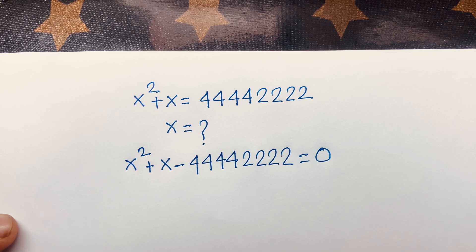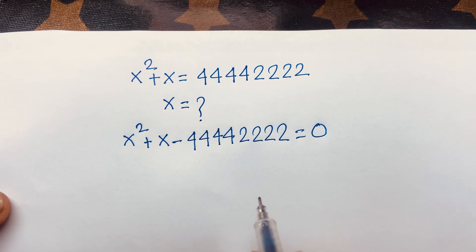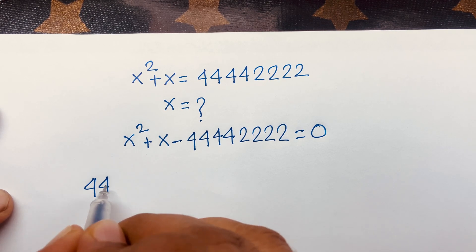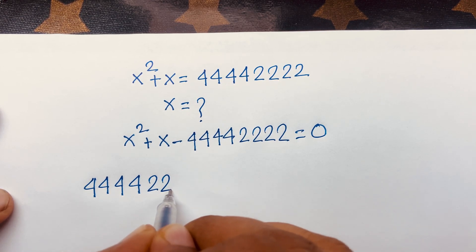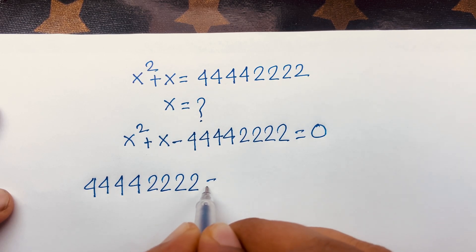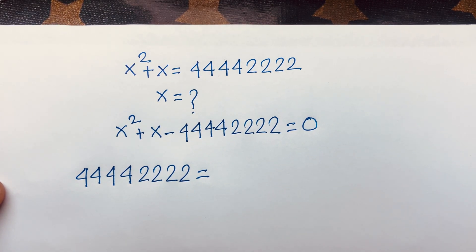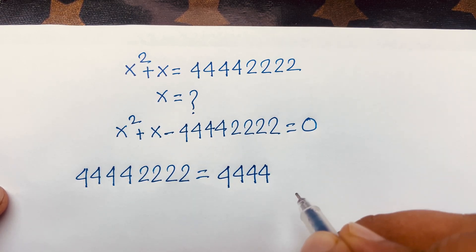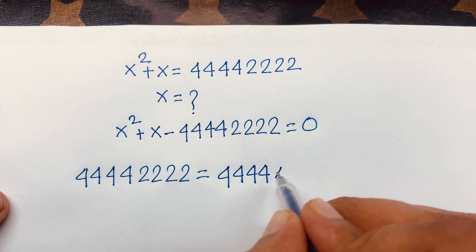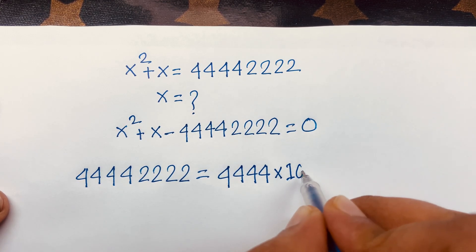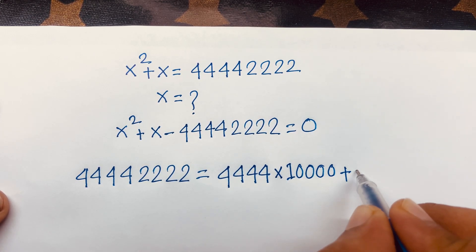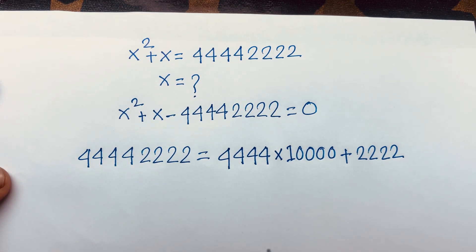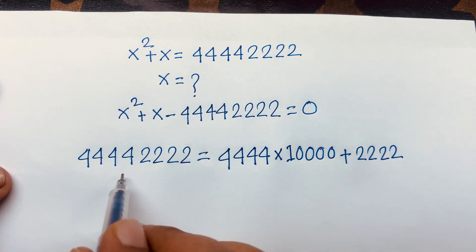At this moment, I can see it is a big number. So this number 44442222 is equal to 4444 times 100000 plus 22222.